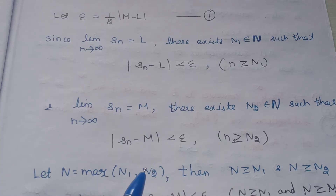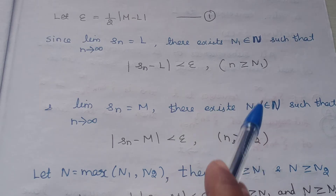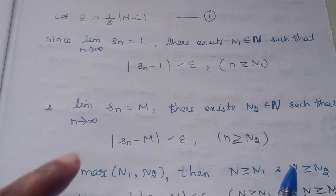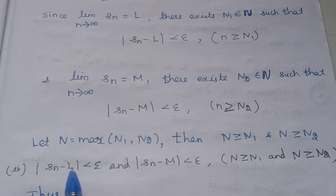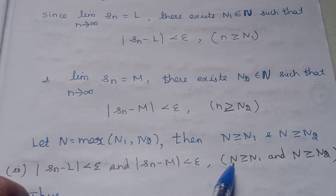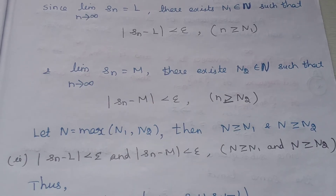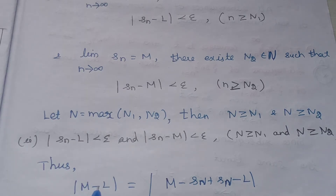Select N equal to the maximum of N1 and N2. Then N is greater than or equal to N1 and N is greater than or equal to N2. Therefore both modulus of Sn minus L and modulus of Sn minus M are less than epsilon. Now let's consider the modulus of M minus L. This leads to an assumption, a contradiction, and a result.